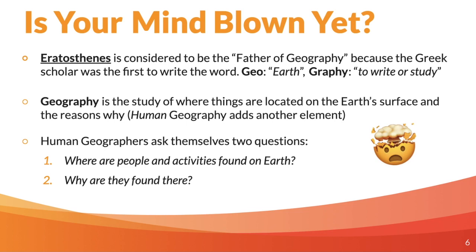Sometimes maps aren't exactly accurate, and there's a reason for that. There was a person named Eratosthenes, and he's considered to be the father of modern geography. He was a Greek scholar — the first scholar to use the word geography, meaning the study of the Earth. In our definition, geography is the study of where things are located on Earth's surface, and why. When we add in the human element, that's where this class really becomes unique, different from just a regular geography course where you're memorizing where mountains, lakes, oceans, and countries are.